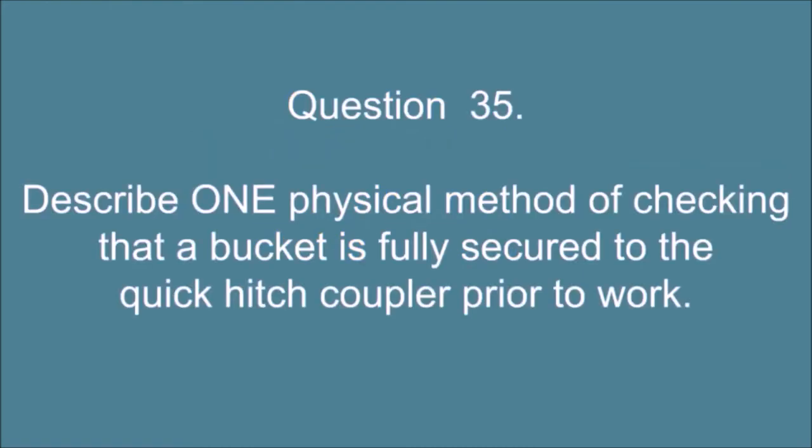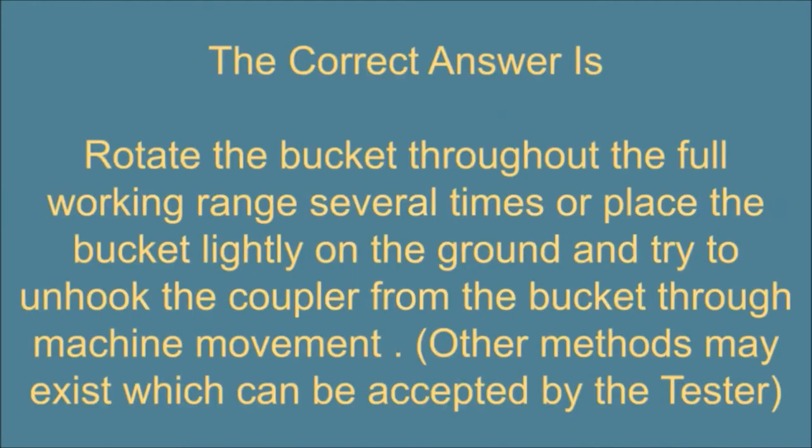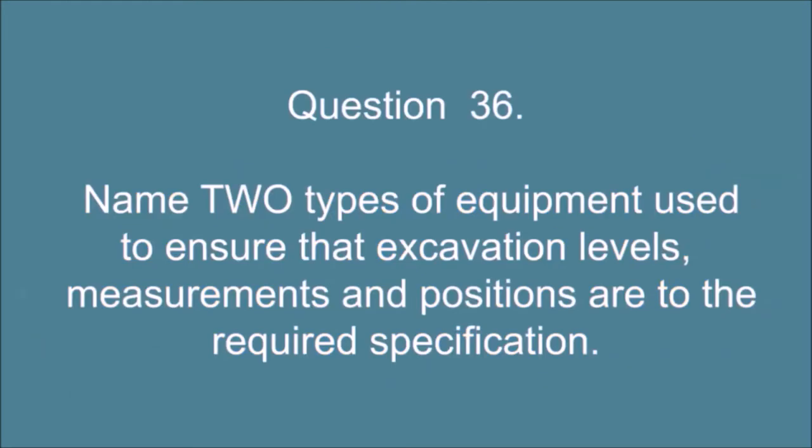Question 35. Describe one physical method of checking that a bucket is fully secured to the quick hitch coupler prior to work. The correct answer is, rotate the bucket throughout the full working range several times or place the bucket lightly on the ground and try to unhook the coupler from the bucket through machine movement. Other methods may exist which can be accepted by the tester.